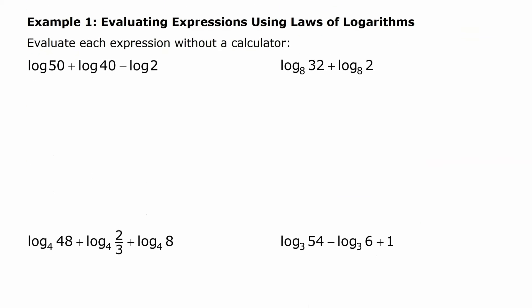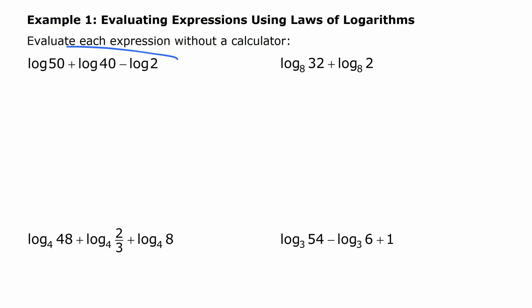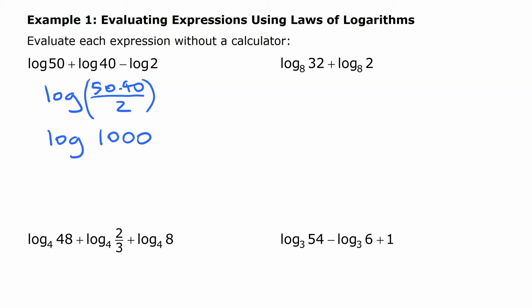First we're going to evaluate some expressions. We have log 50 plus log 40 minus log 2. We can write this as a single logarithm: logarithm of 50 times 40, then subtract log 2, which is equivalent to dividing by 2. So that's log of 50 times 40 over 2, which is log of 1,000, and log of 1,000 is 3.